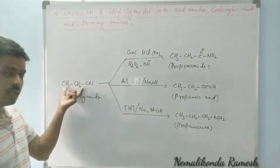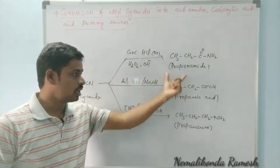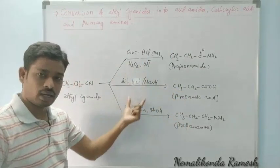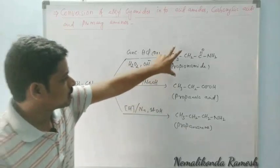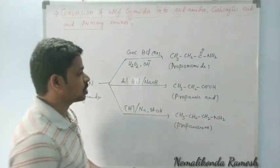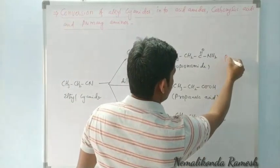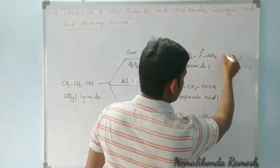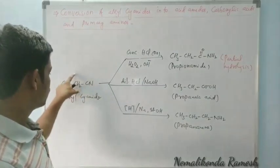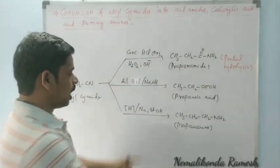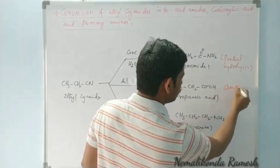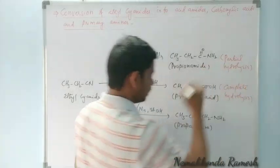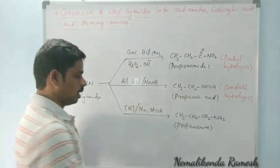So the same compound, ethyl cyanide, can be converted to acid amide, carboxylic acid, and primary amine under different conditions. The first reaction is called partial hydrolysis — on partial hydrolysis, cyanides are converted to amides. The second is complete hydrolysis — on complete hydrolysis, carboxylic acids are formed.